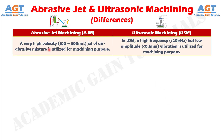Difference number 1: In abrasive jet machining, a very high velocity jet of air-abrasive mixture at around 100 to 300 meters per second is utilized for machining, whereas in ultrasonic machining, a high frequency — greater than 20 kilohertz — but low amplitude — less than 0.1 millimeters — vibration is utilized for machining.